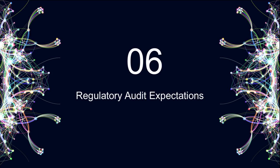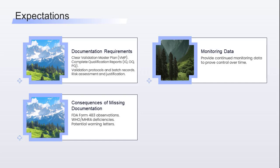Let's see what the regulatory expectations are. Regulators expect you to have a clear validation master plan (VMP), show complete qualification reports — IQ, OQ, PQ — provide validation protocols and batch records, demonstrate risk assessment and justification for the level of qualification and validation, and present continued monitoring data to prove control over time. Missing or incomplete documentation can trigger FDA Form 483 observations, WHO or MHRA deficiencies, or even a warning letter.